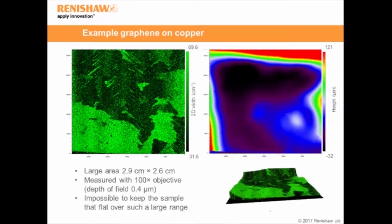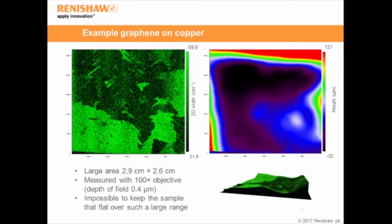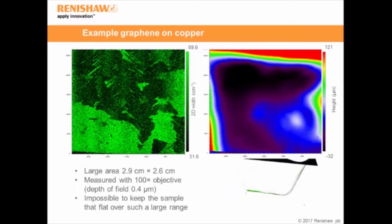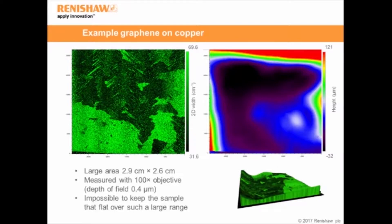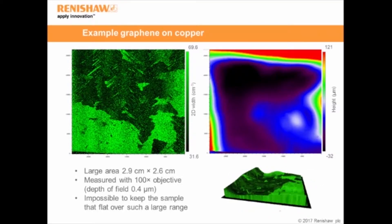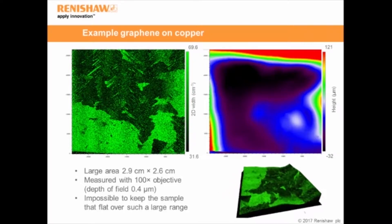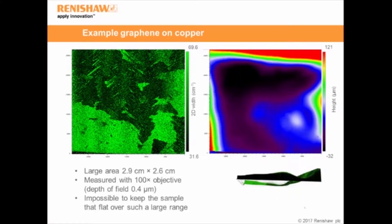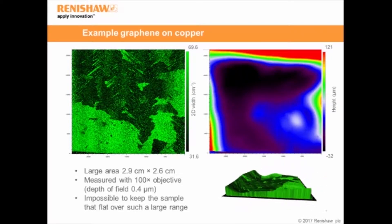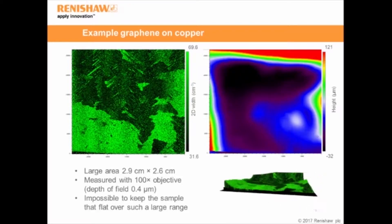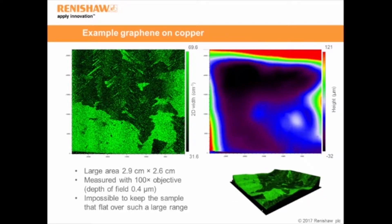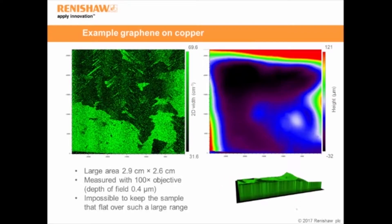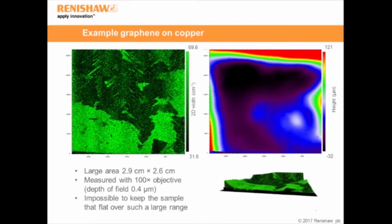That was a very small area of graphene on copper — approximately 30 by 20 microns. What I want to show now is how this technique can scale up to macroscopic objects. Here we have a graphene on copper sheet which is 2.9 by 2.6 centimeters. We carried out a Raman map over this graphene sheet using LiveTrack and a 100x lens. The image on the left shows the 2D width, which is an indicator of graphene film thickness — brighter regions correspond to many layers, darker regions to one or two layers. On the right we have a topography image showing the height changes across the area.